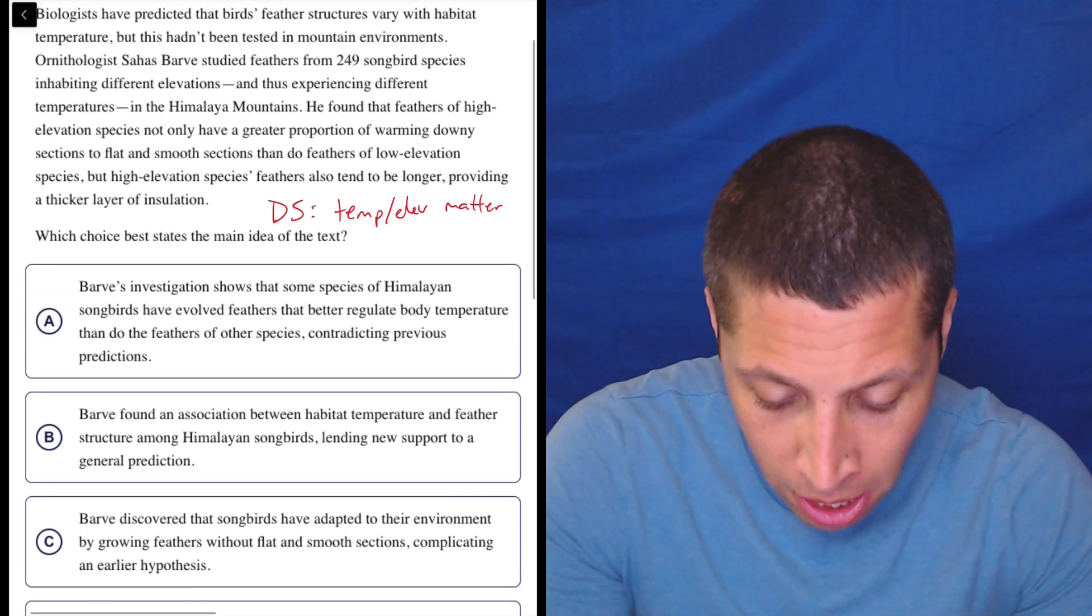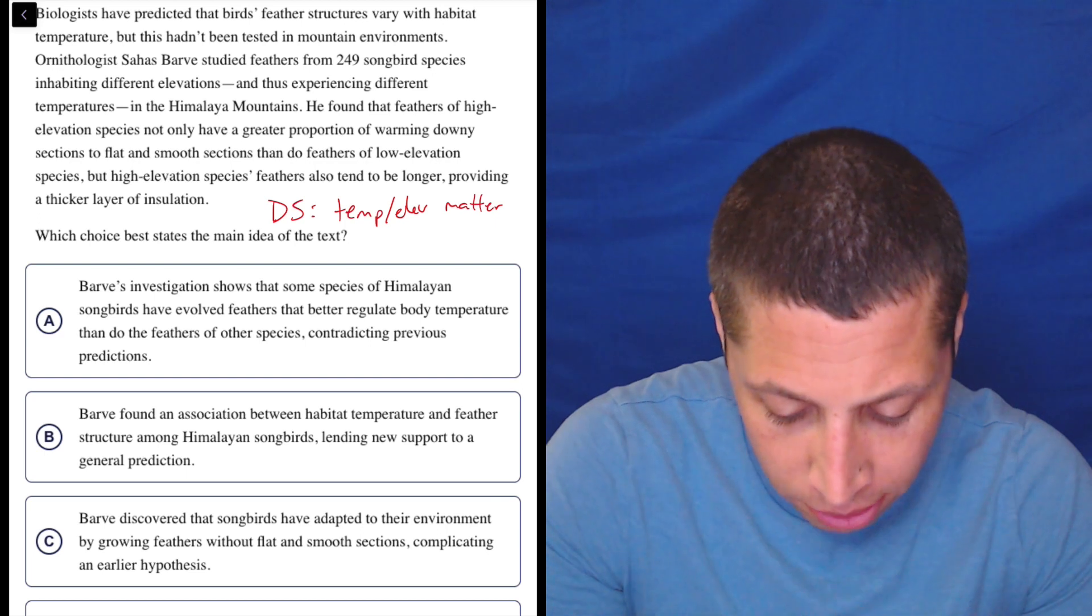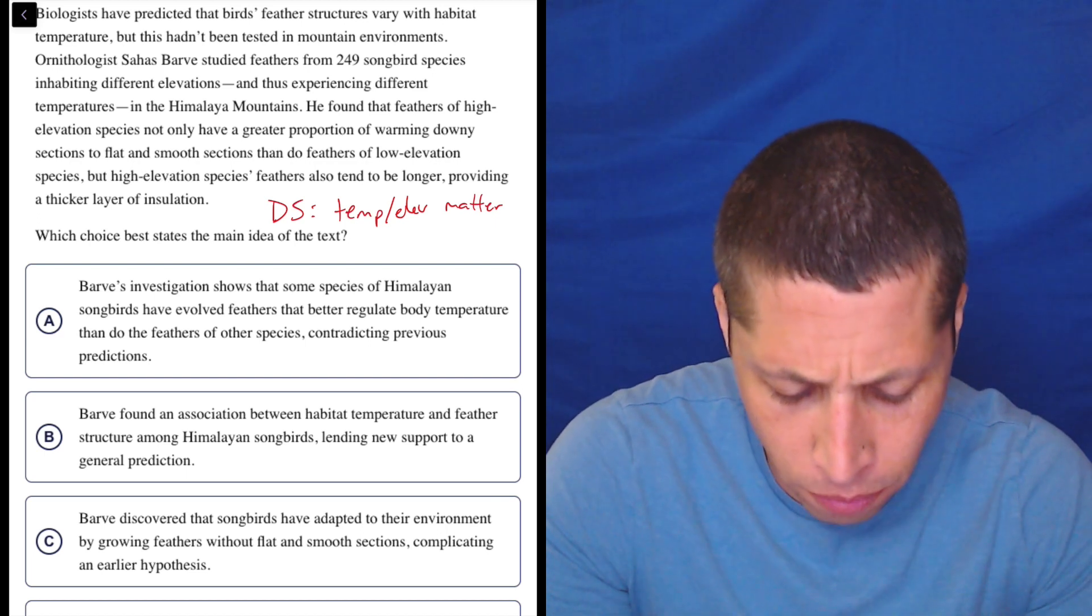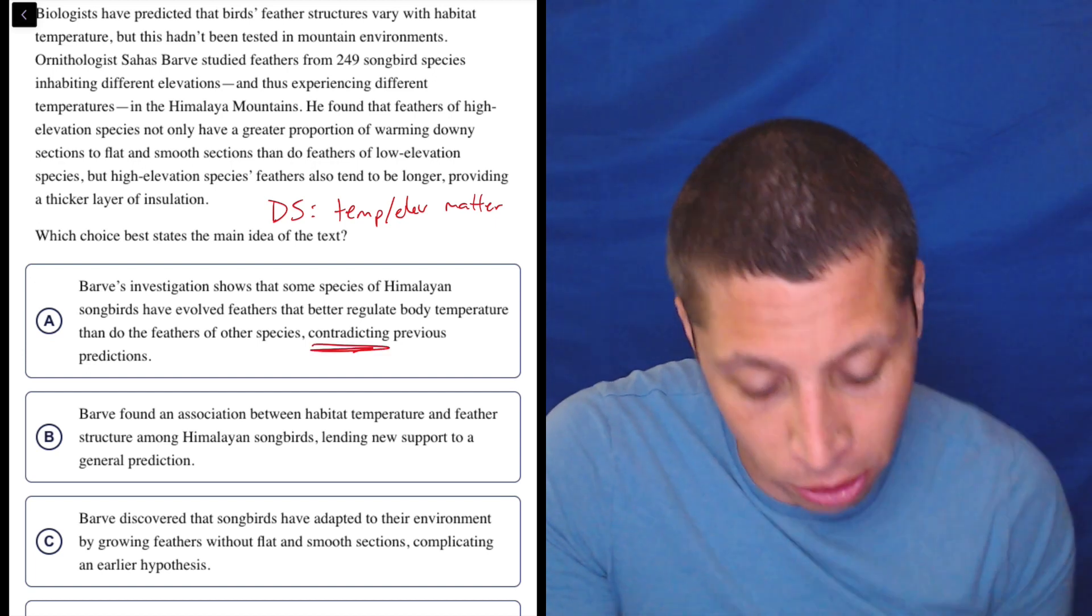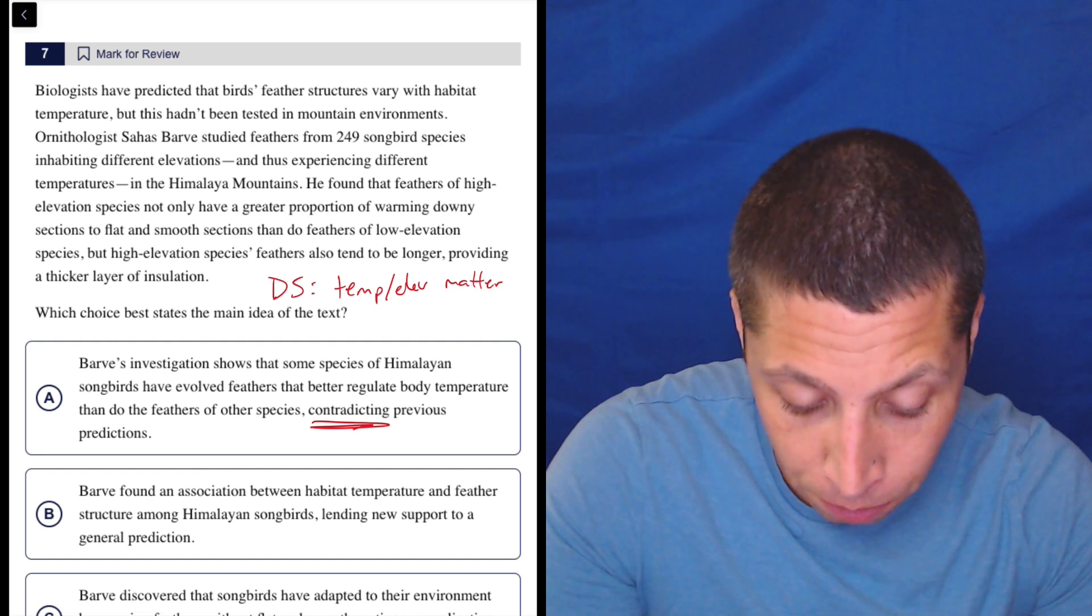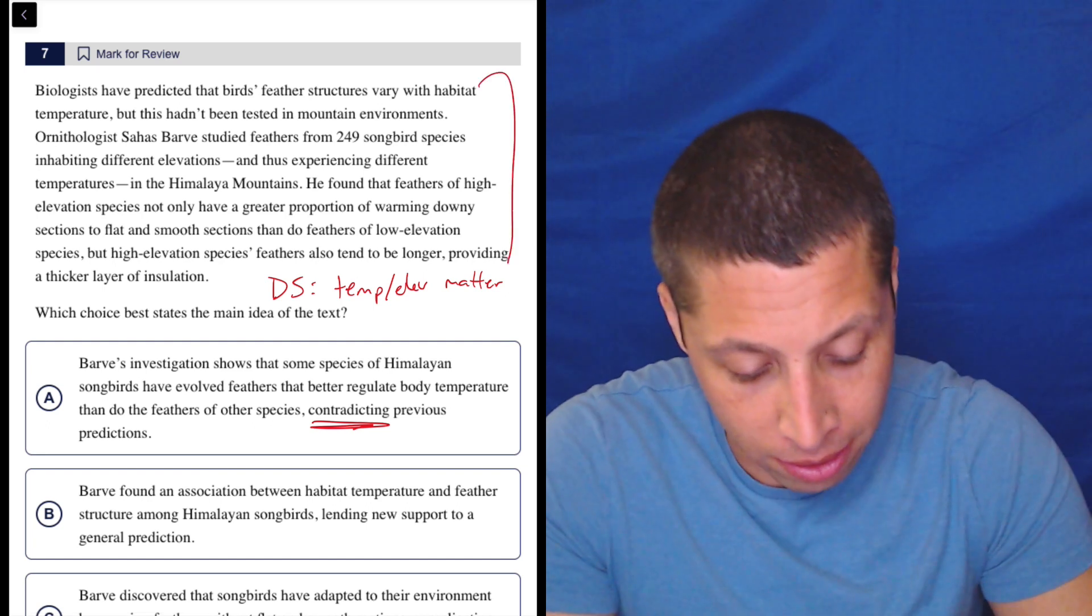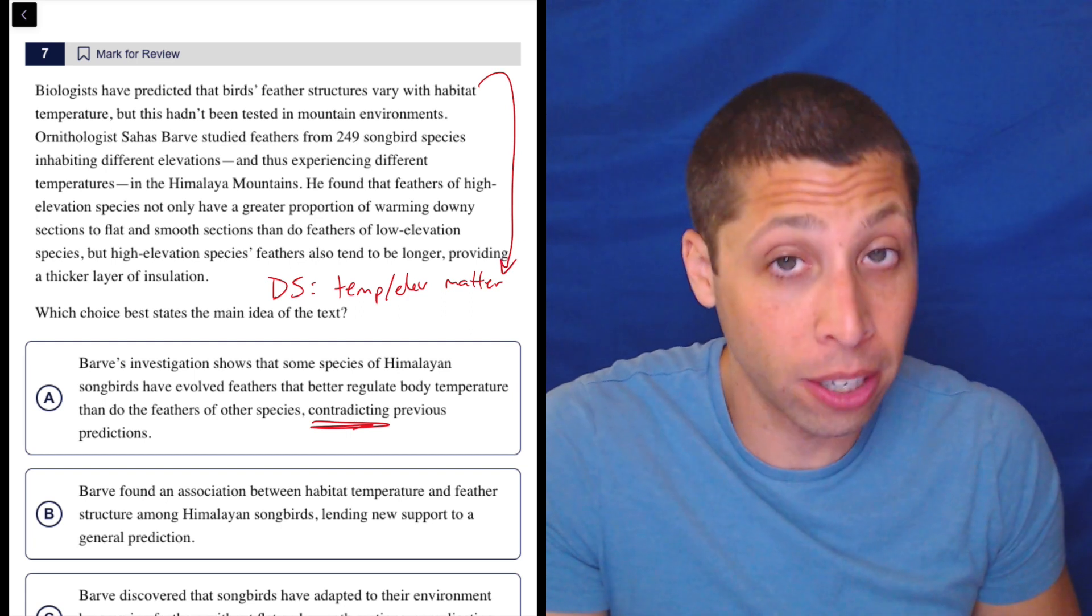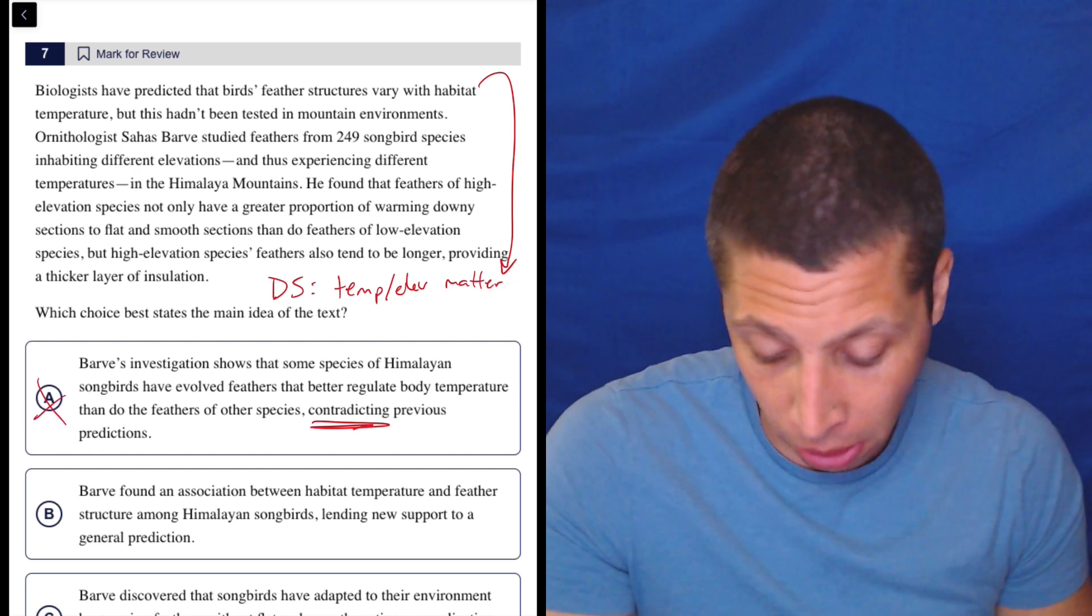A, Barv's investigation shows that some species of Himalayan songbirds have evolved feathers that better regulate body temperature than do the feathers of other species contradicting previous predictions. That's very strong, right? So what were the previous predictions? The feather structures vary with habitat temperature. Well, that seems to say the same thing that we concluded, that the temperature and the elevation matter. So I don't think that's contradicting previous predictions. That seems to be supporting them.